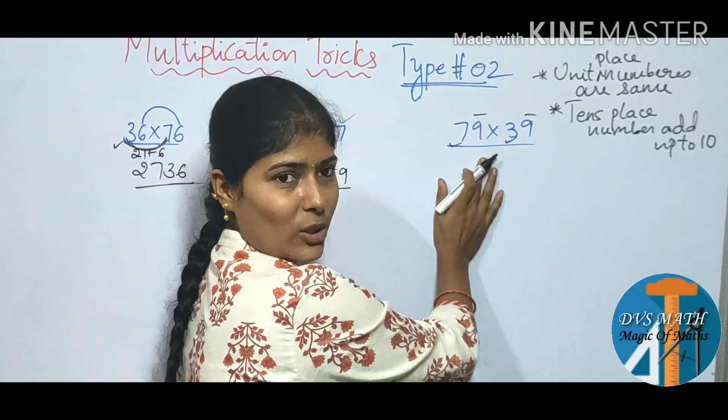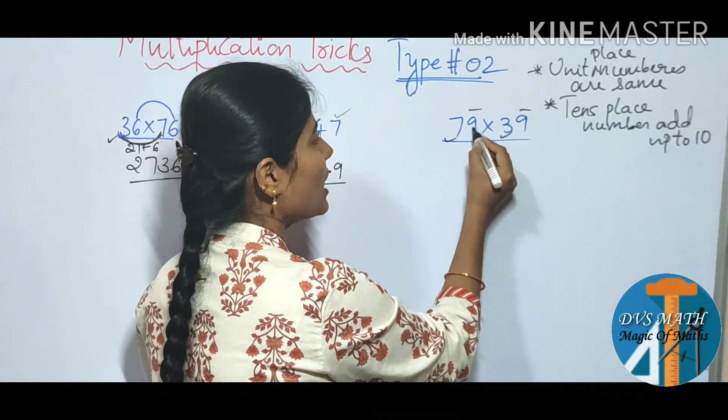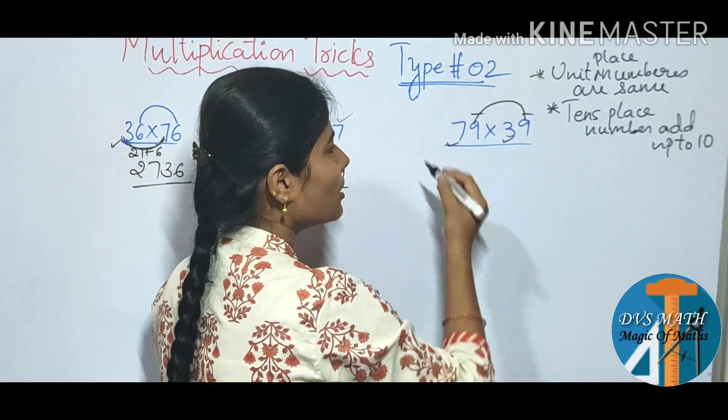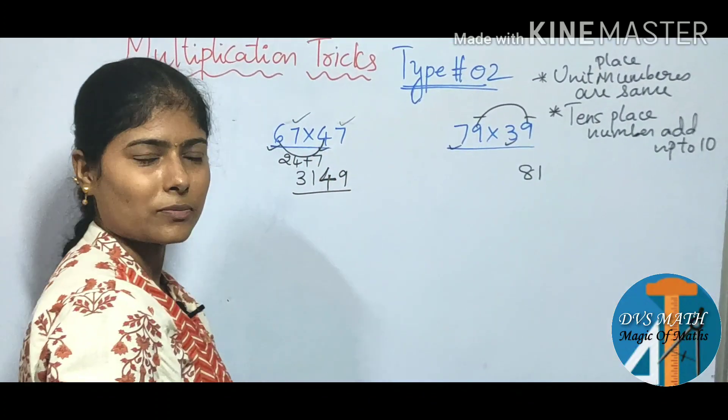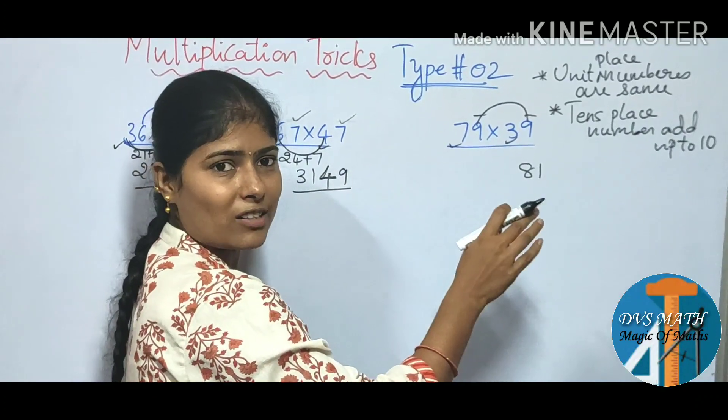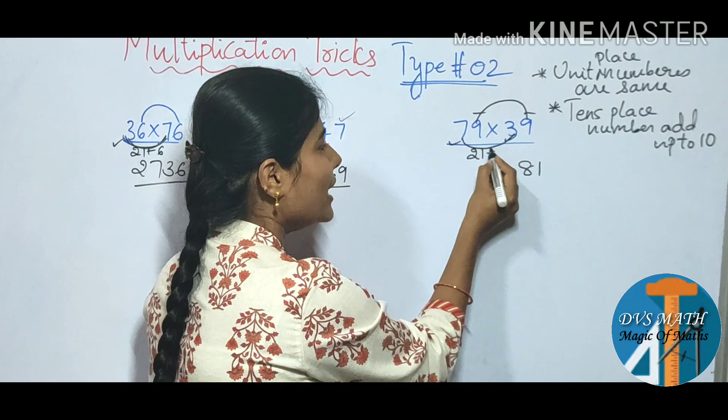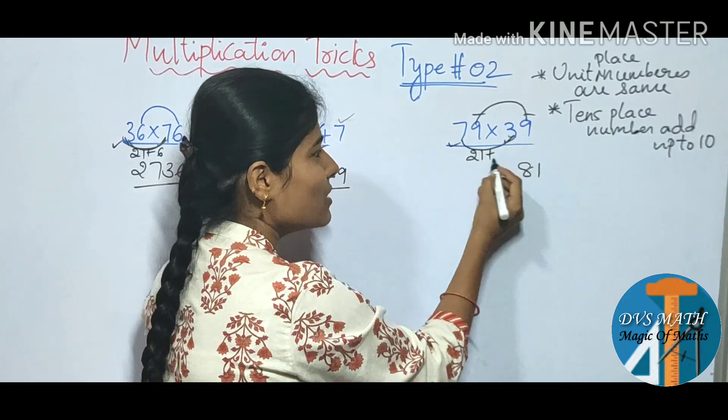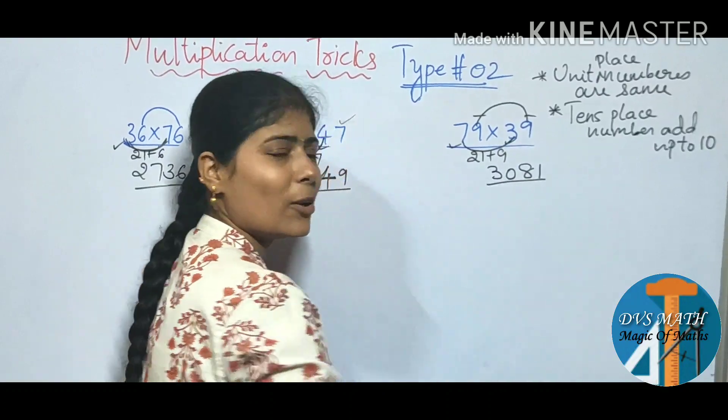So next number is 79 into 39. So same trick first. Same number multiply. 9, 9 is 81. So this number add 10 times. We multiply that number. 7, 3 is 21. Plus same number. 21 plus 9 is 30.